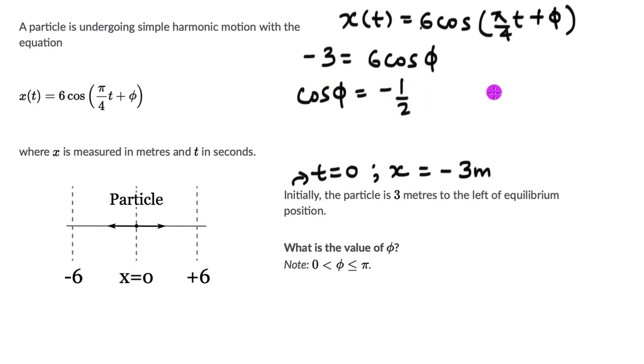Let's try to recall: cos(φ) was 1/2 when φ was 60 degrees, or π/3. This is when φ was π/3, but we need cos(φ) to be equal to -1/2.